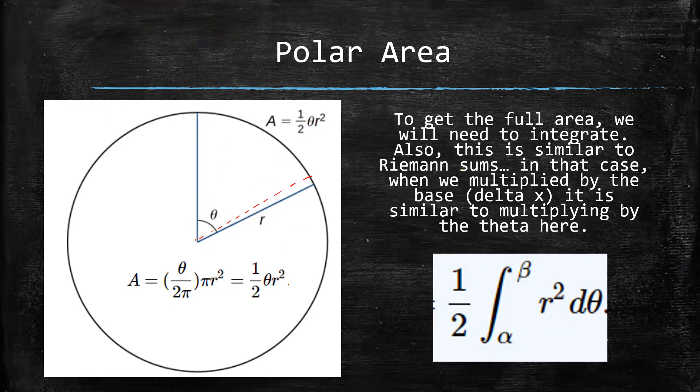And what you're going to do is you're going to take all of those infinitely small pieces, and you're going to add them all up by integrating. And that one half is in front of the integral because obviously it doesn't matter if you put it on the inside or the outside. So that's how we get your polar area formula.